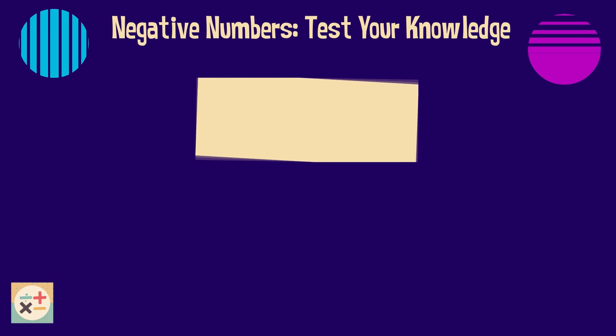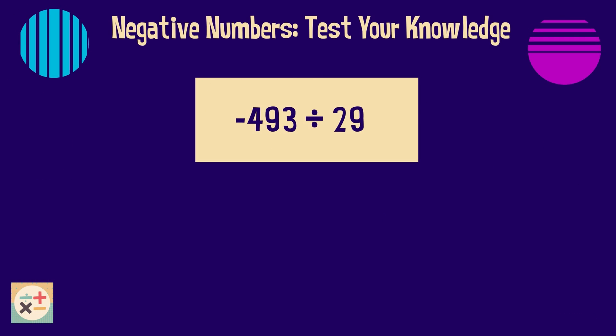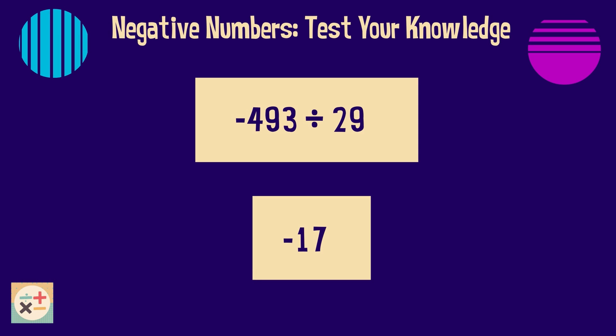Question 8. Calculate minus 493 divided by 29. The answer is minus 17.